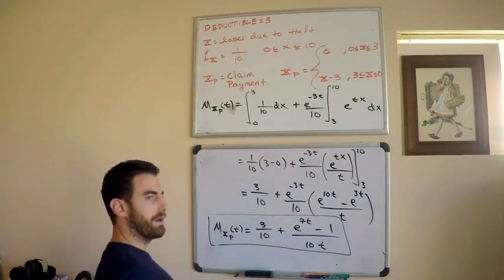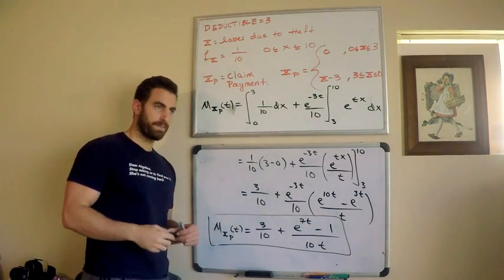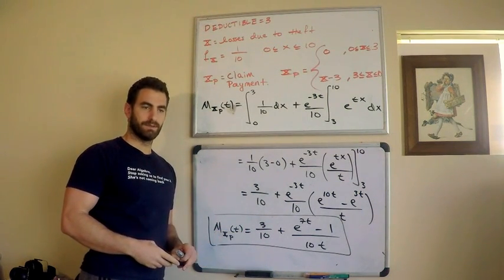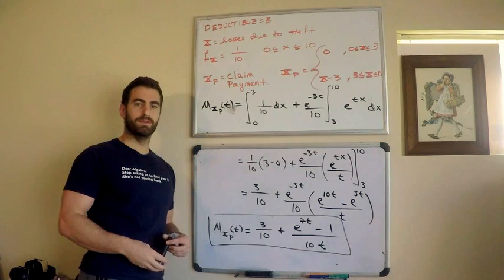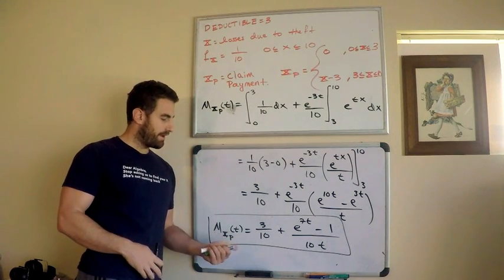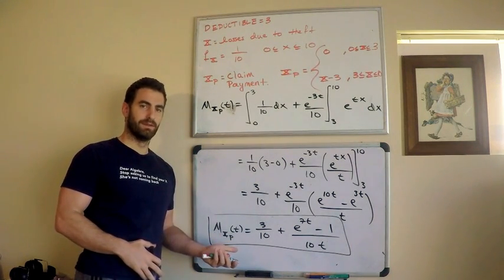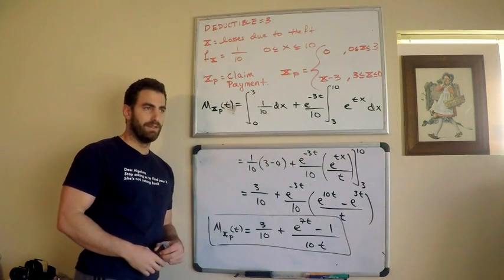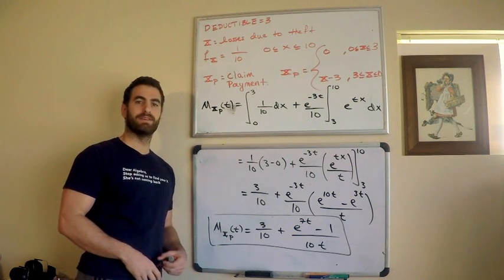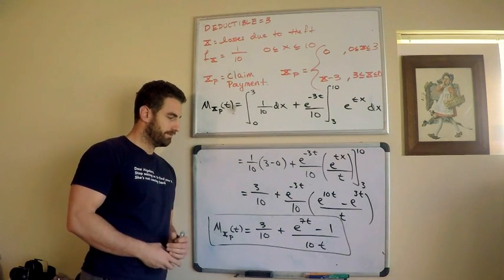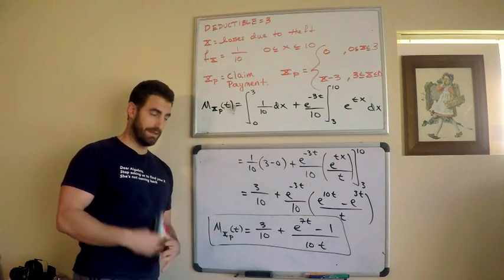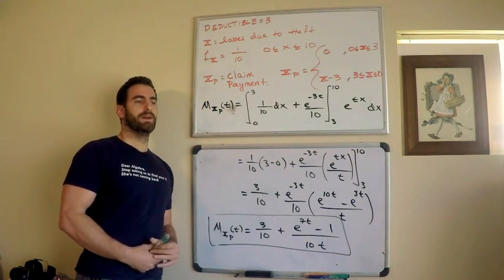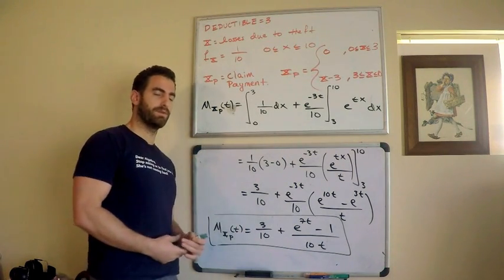Again, just to reiterate why this is potentially useful. This is useful because if you know the moment generating function, and if you're watching this video, you probably do, then you know that I can find the expected value from this. If I differentiate this and replace t with 0, that gives me the average claim payment, the expected claim payment. From there, I can find the variance, standard deviation, things like that. So, quite useful stuff. Please like the video, comment, and subscribe.